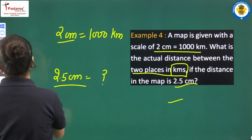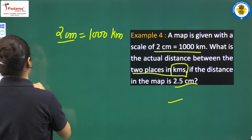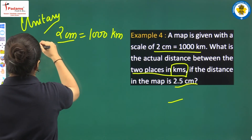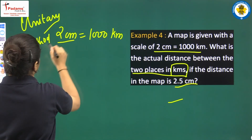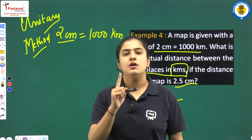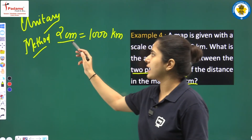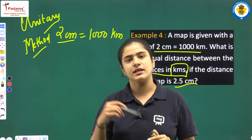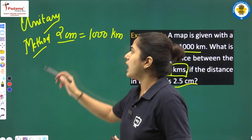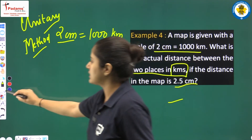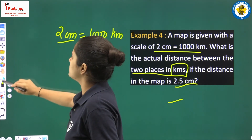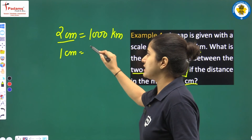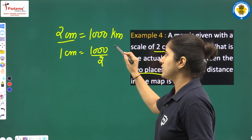Whenever this type of question comes, we follow the unitary method. In the unitary method, we first find the value for one unit. If 2 cm equals 1,000 km, then 1 cm equals 1,000 divided by 2 km.